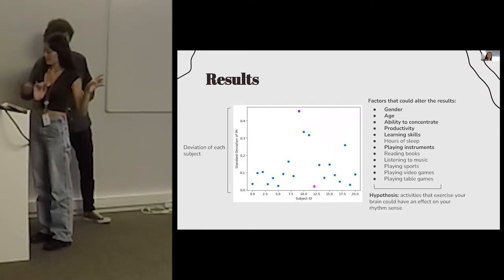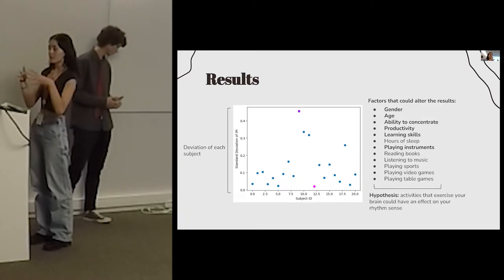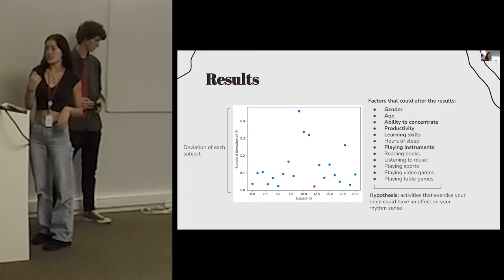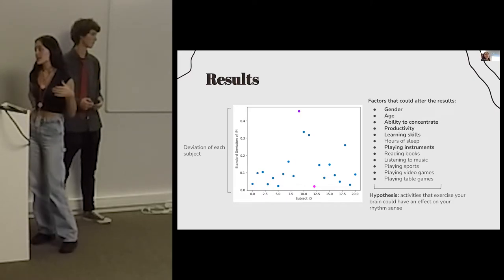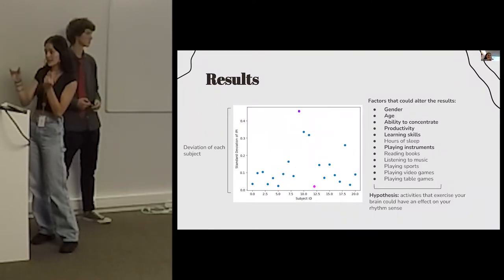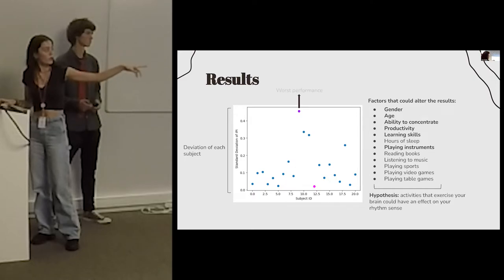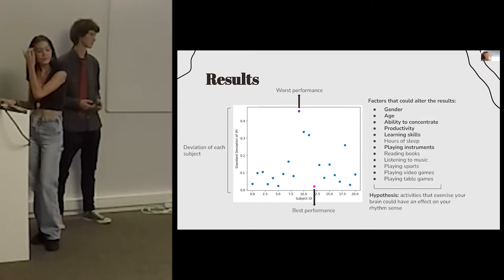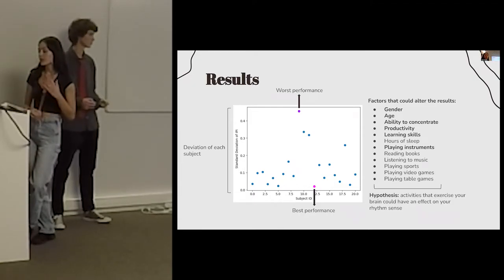Here we have a graph with information from all subjects combined. Each dot represents the performance of one subject. The X axis represents the subject's ID, which was kept anonymous using numbers. The Y axis represents the deviation of each subject — the farther the point from the X axis, the worse the performance. The purple dot represents the worst performance and the pink one the best. When conducting the experiment, we had to consider factors that could alter our results.